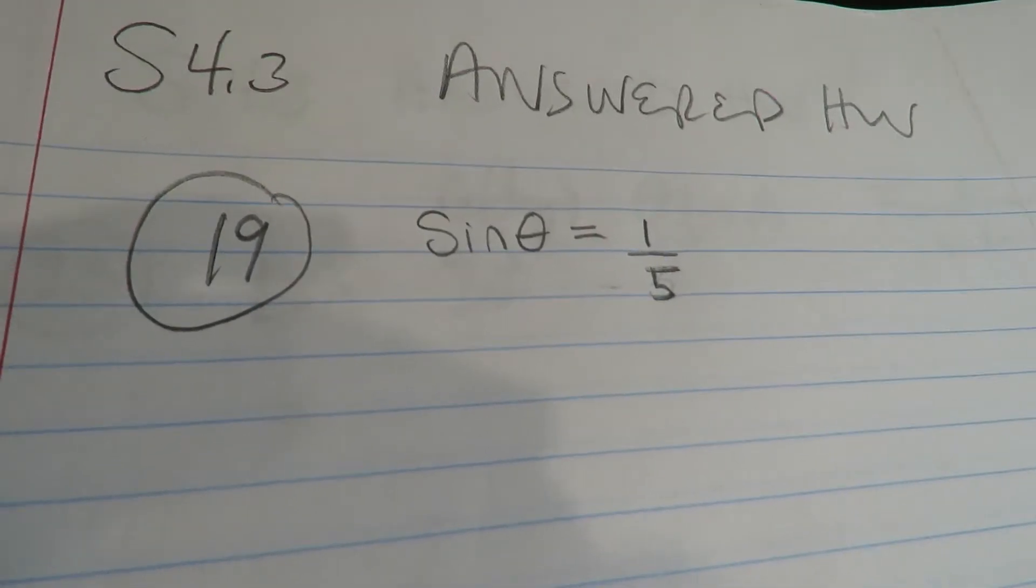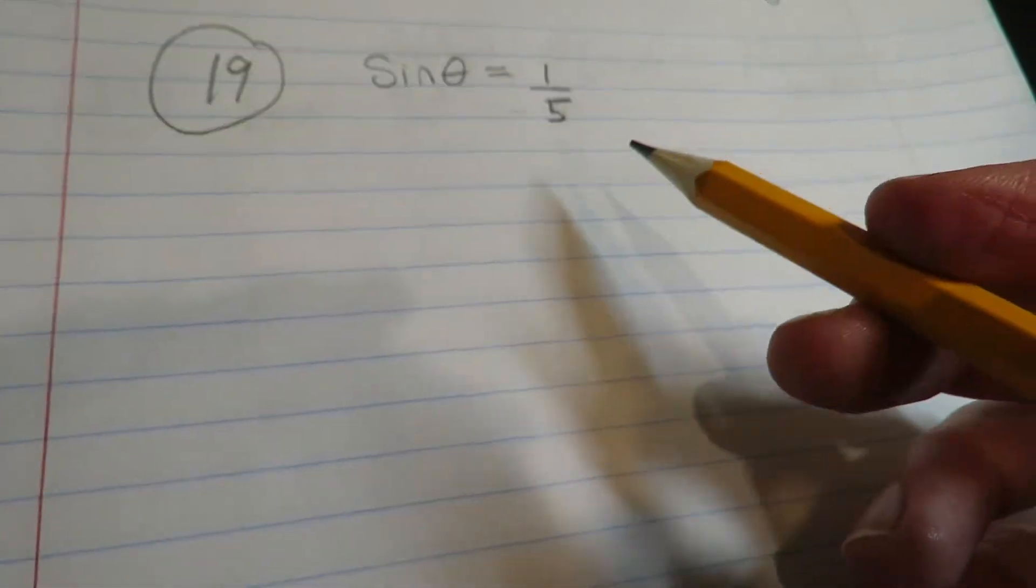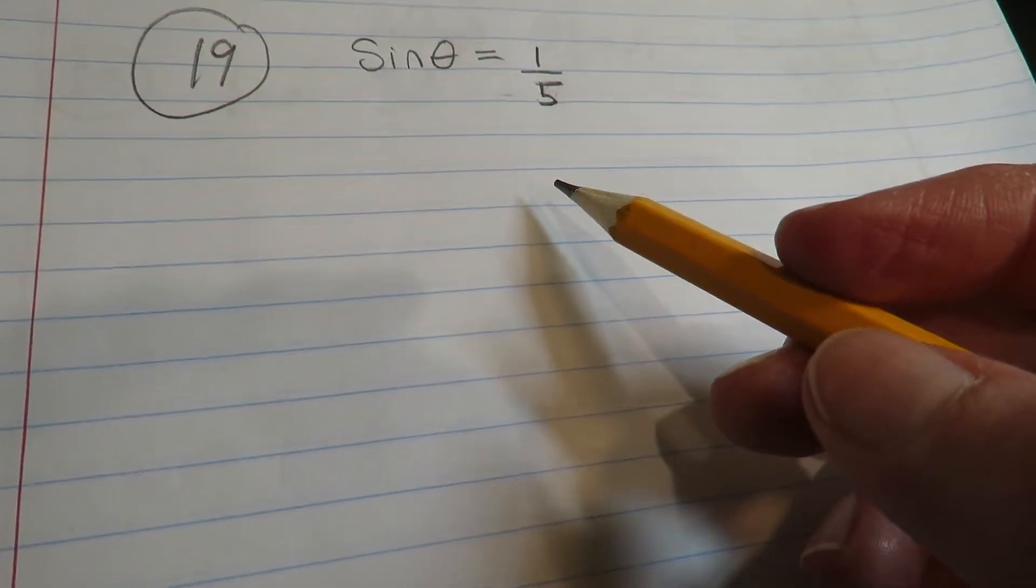Okay, gang, this is section 4.3, number 19. They're not giving you a standard triangle here. They're going to mostly give you just random values.